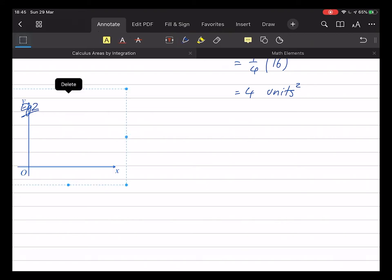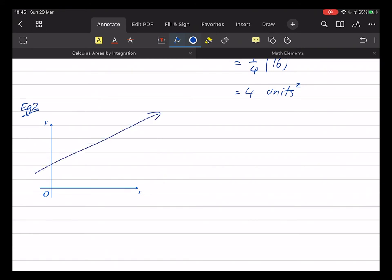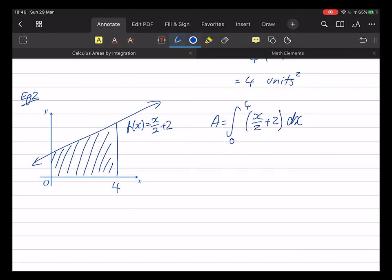And just to show that it wasn't a trick, let's complete what was example 2 from last time. We had f of x is x on 2 plus 2. We nudged it up by 2. So, we've effectively added in a rectangle of 2 by 4, which is 8. So, 8 and 4 should give us 12.